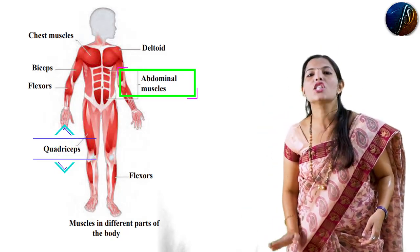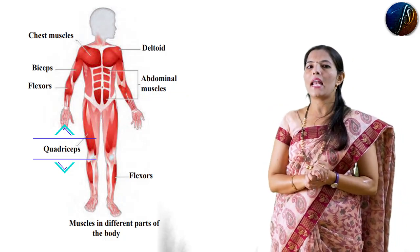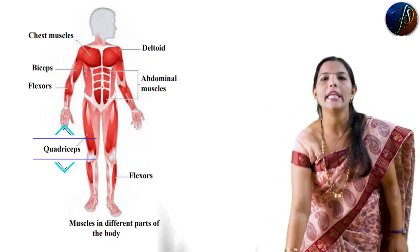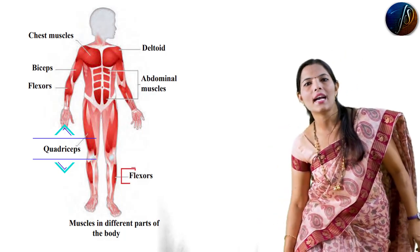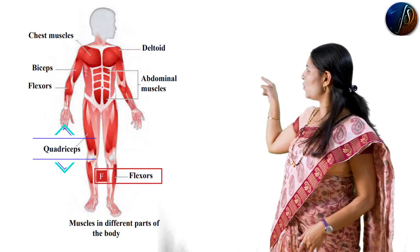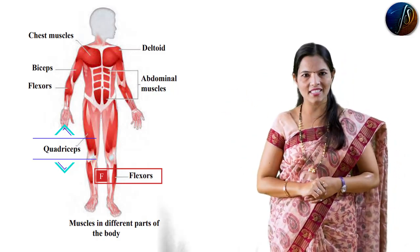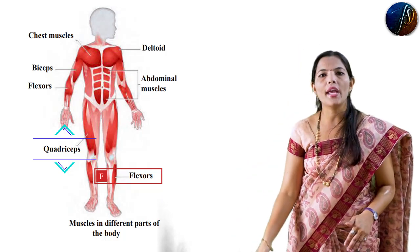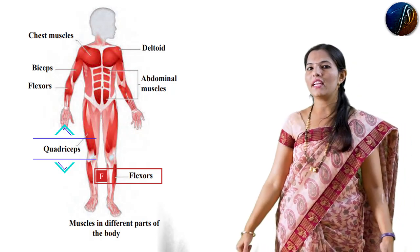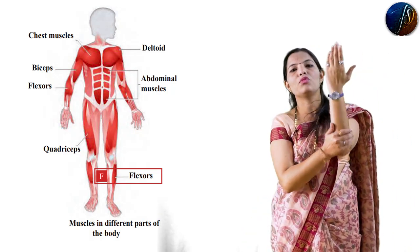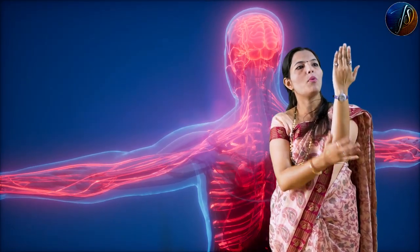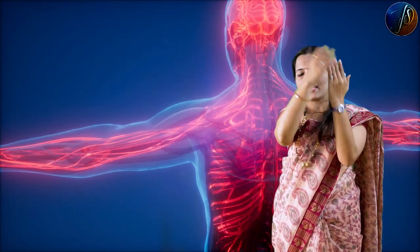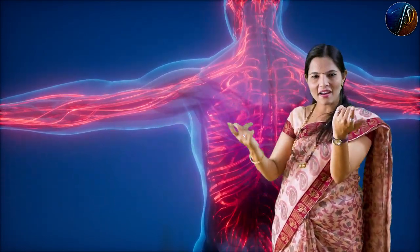You also have quadriceps - the thigh muscles. Flexors come from your elbow to the tip of the middle finger. There is one flexor here, and another flexor here. In this way, all the muscles in the diagram should be clear to you.